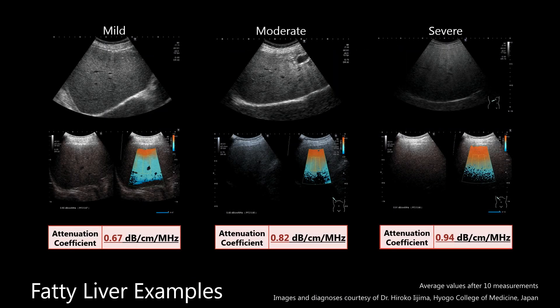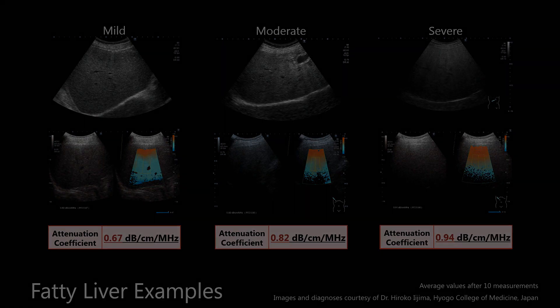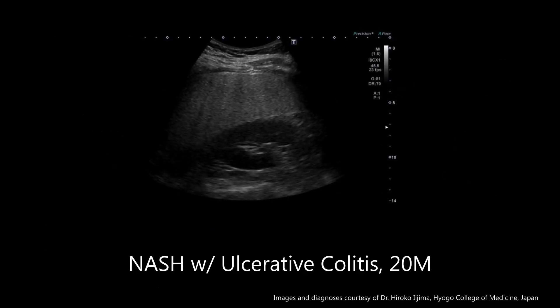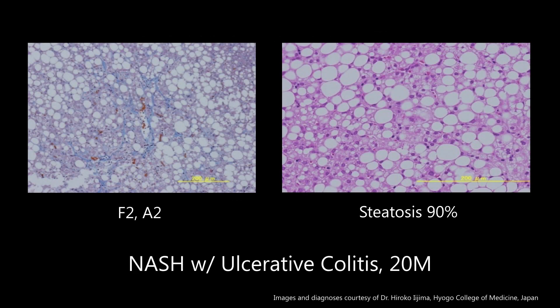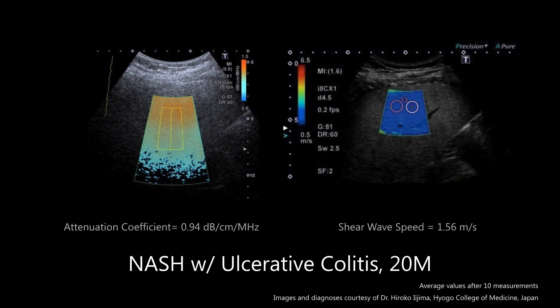Here are examples of how attenuation coefficient increases with liver fat content in cases of mild, moderate, and severe steatosis. This is a man in his early 20s diagnosed with non-alcoholic steatohepatitis, or NASH, and ulcerative colitis, showing fatty liver on qualitative ultrasound. Histopathological examination following liver biopsy demonstrated F2 stage fibrosis and A2 grade inflammation, indicating significant fibrosis and moderate inflammatory activity. Fat content was scored at 90%, indicating severe steatosis. Quantitative ultrasound assessment using attenuation imaging and shear wave elastography show consistent findings.